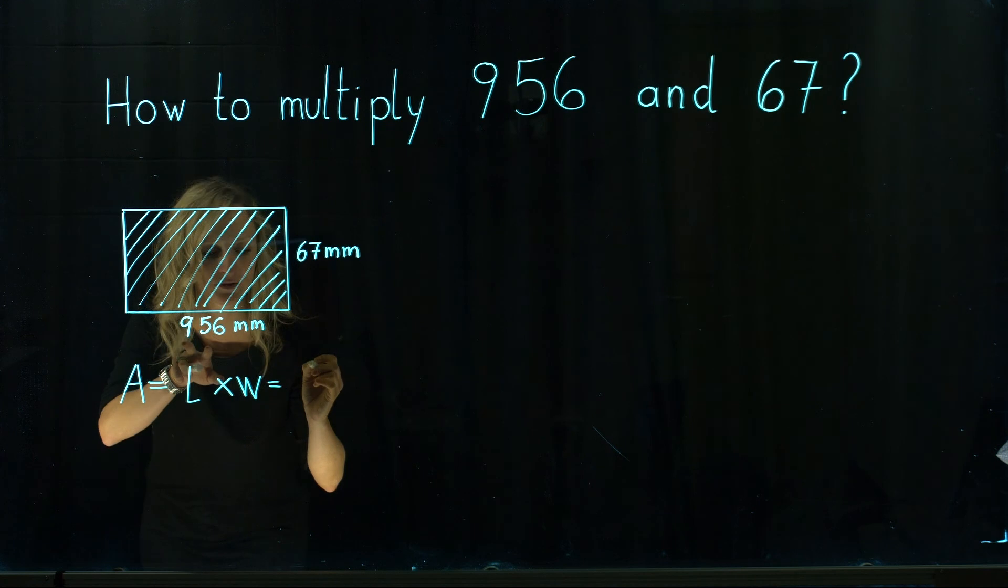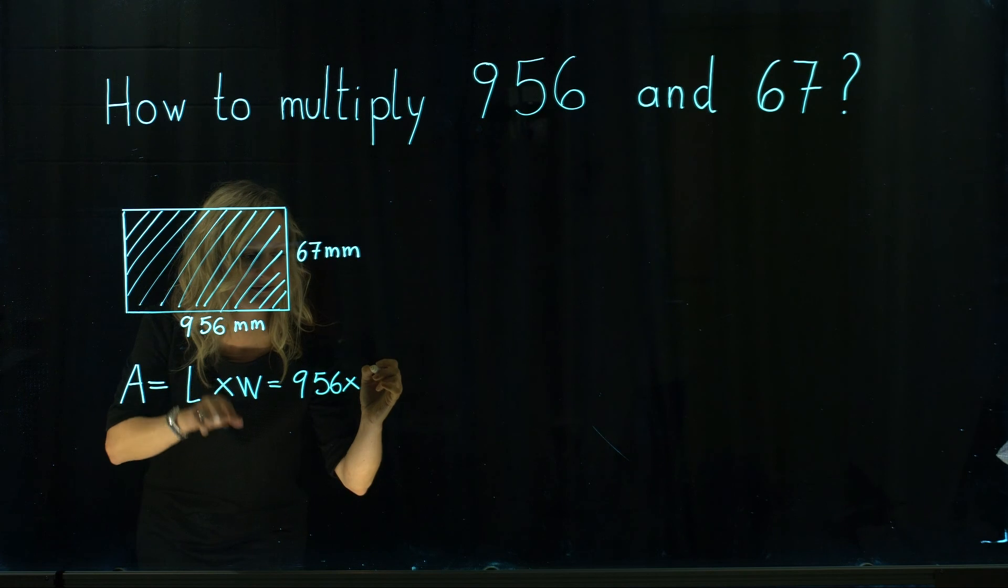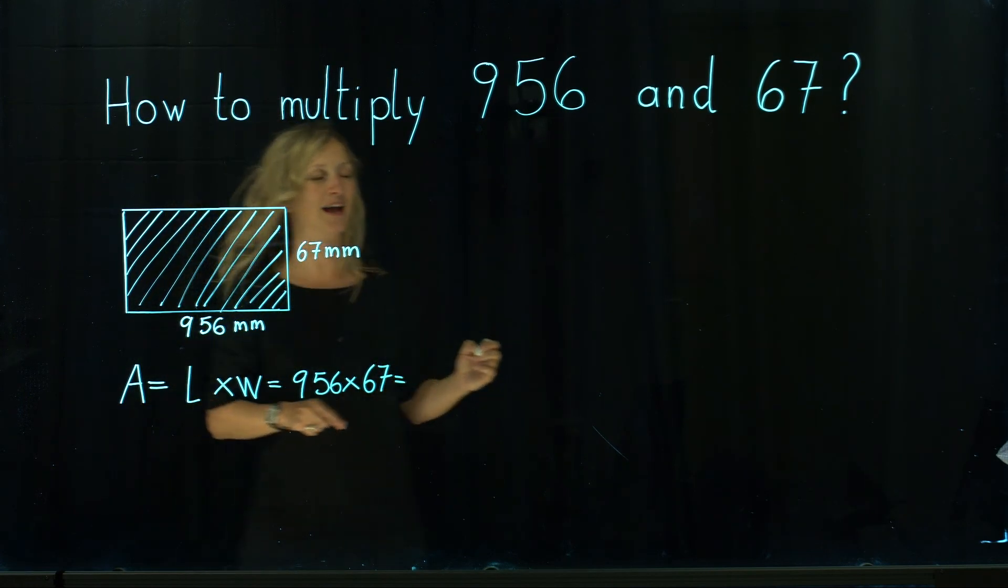We are calculating that by multiplying length times width. So that's how we will multiply 956 times 67 together. How do we do that?